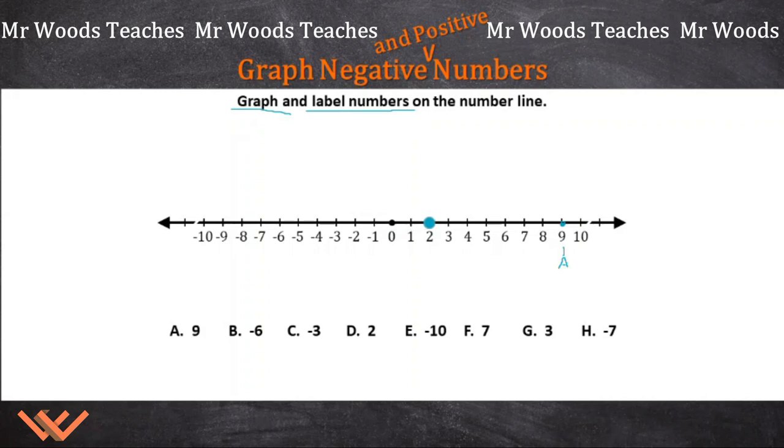We find 2, just count it over, put the dot, and I can put a label on that, and that is D. See how I'm labeling that, it's just real easy, find it, label it.